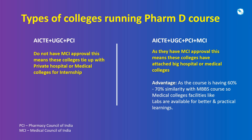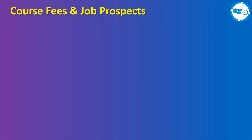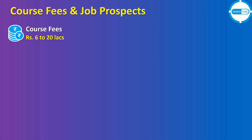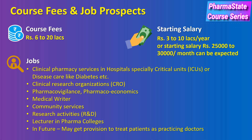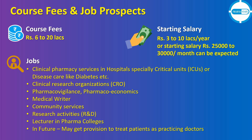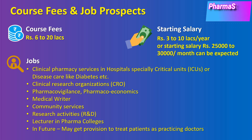Coming to course fees and job prospects: course fees range from 6 to 20 lakhs, and starting salary could be from 3 to 10 lakhs per year — around 25,000 to 30,000 per month can be expected. Jobs are varied: clinical pharmacy services in hospitals and ICUs, clinical research organizations, pharmacovigilance, medical writing, community services, research activities, and lecturer positions in pharma colleges. In future, there may be provision to treat patients as practicing doctors, given government policies become clear on this.